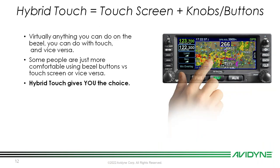Hybrid touch combines touchscreen, knobs, and buttons — anything you do with the bezel you can do with touch and vice versa. Some people coming from a legacy navigator are used to buttons only, having never been behind a touchscreen GPS. Hybrid touch gives you the choice of how you want to interact with your IFD, allowing you to segue into touchscreen use at your own pace.